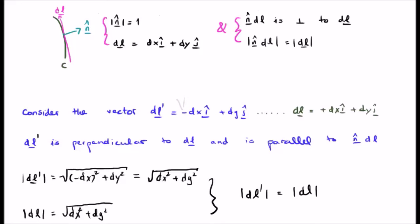If you think about it, DL prime is also perpendicular to DL, which means it is parallel to N hat DL.